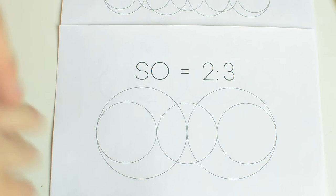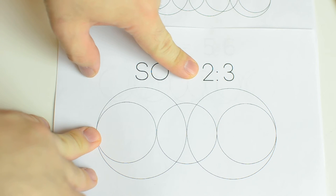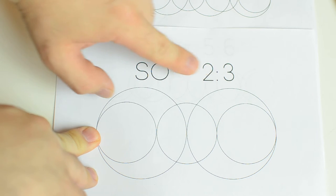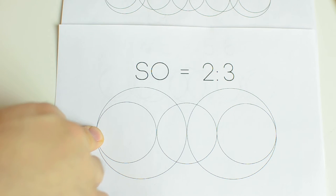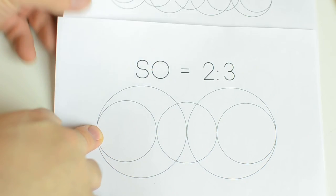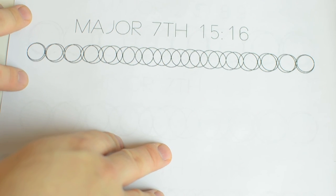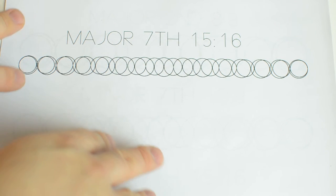And we simply multiply two times four is eight, and three times five is fifteen. So we get the ratio eight to fifteen, which we can represent as fifteen to sixteen, multiplying eight by two to get sixteen. And as you can see, this is a pretty complicated ratio.